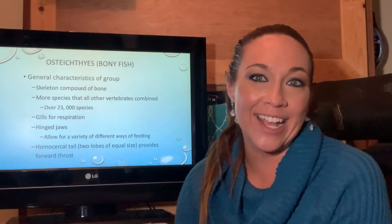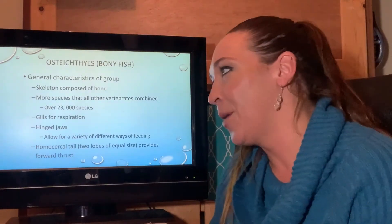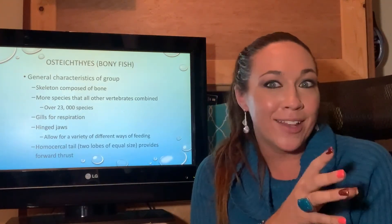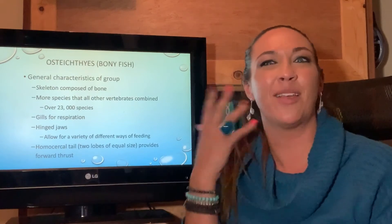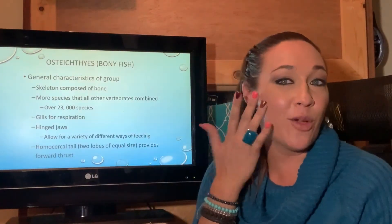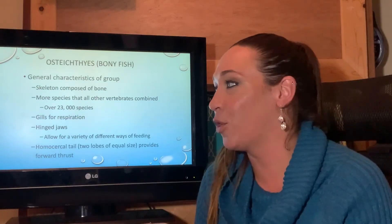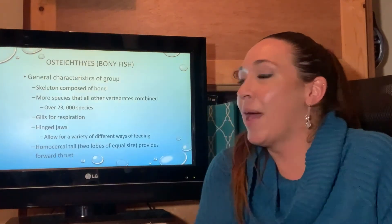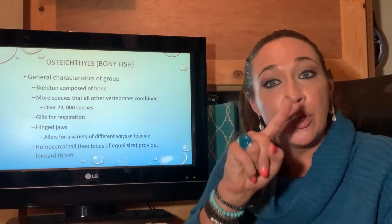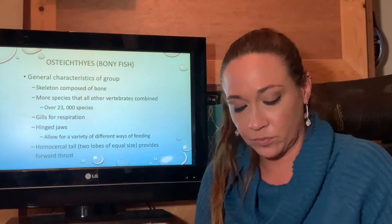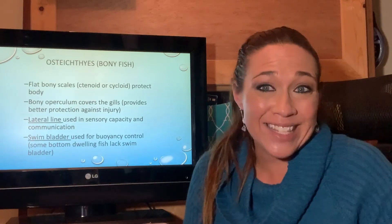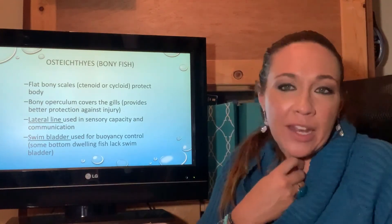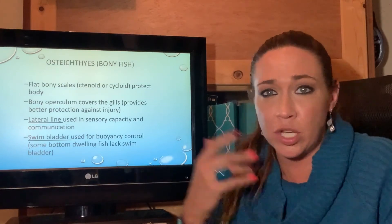Finally, the bony fishes — Osteichthyes. The key difference from Chondrichthyes is a bony skeleton rather than a cartilaginous one. Bony fishes have a bony operculum covering the gills, a hinged jaw, gills, and a homocercal tail with two equal lobes. Their scales are flat — either ctenoid, cycloid, or other shapes — used to protect the soft body tissues.